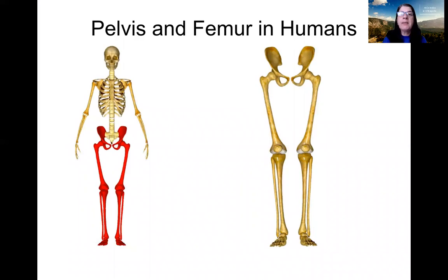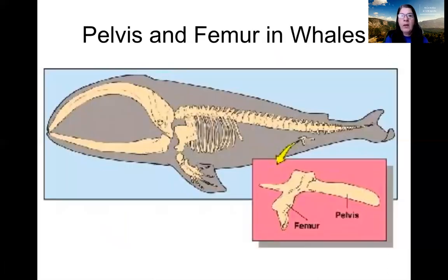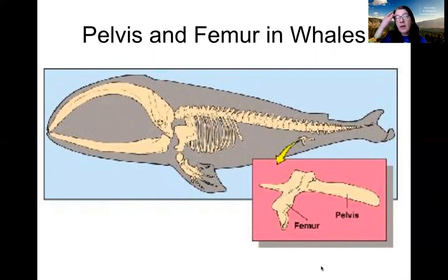Another example of vestigial structures is the pelvis and the femur. We use the pelvis and femur bones to walk, and four-legged animals also use them to walk. But what use does the whale have for them? The whale has a femur and a pelvis, and though the femur is very small, it is there. This is evidence that the whale and four-legged hoofed animals are closely related and share a common ancestor in the distant past.